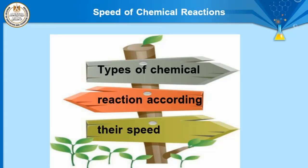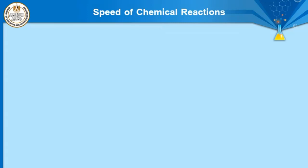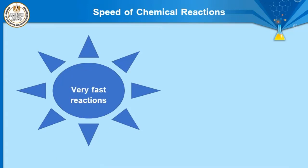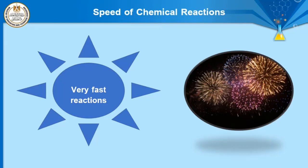Chemical reactions can be classified according to their speed. Number one: very fast reaction. As you see in the slide, fireworks are an example of a very fast chemical reaction. So the first type is very fast reactions, such as fireworks.